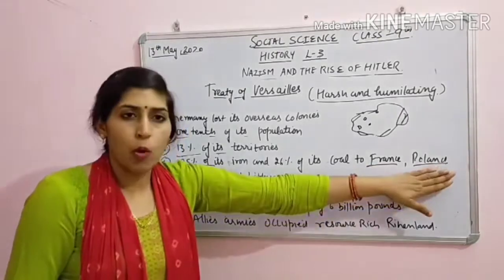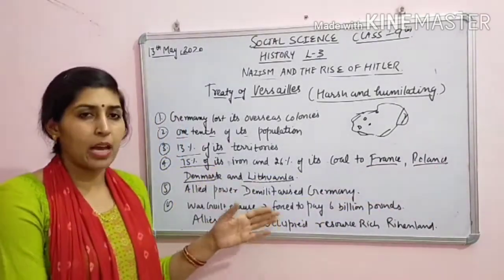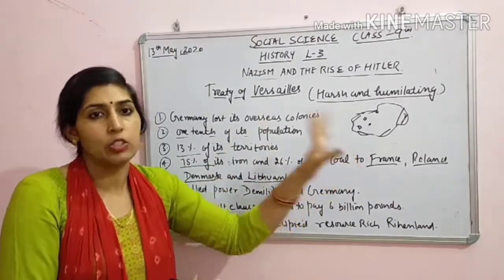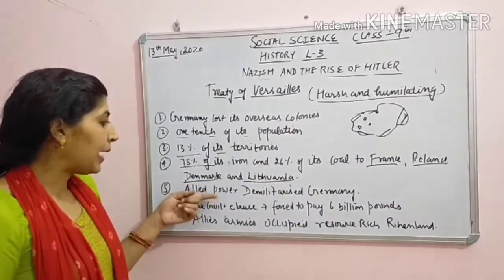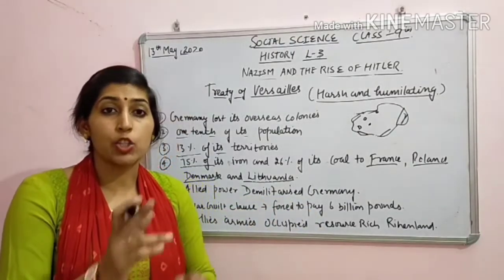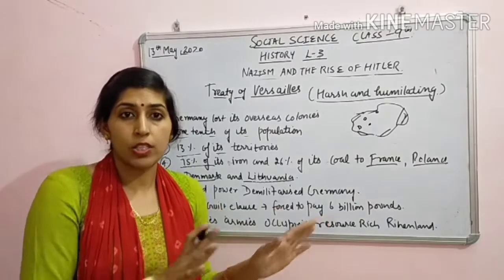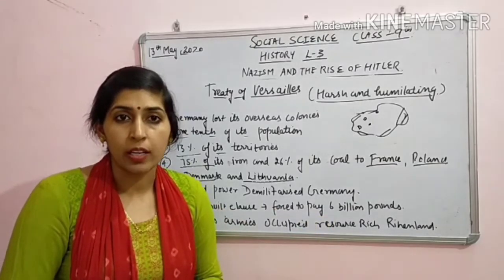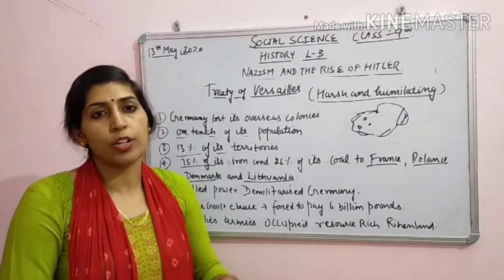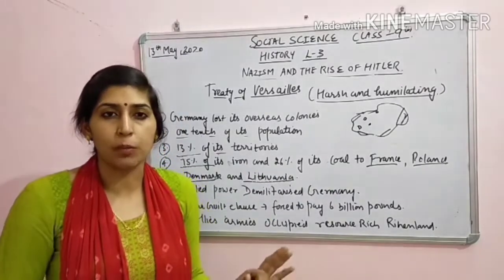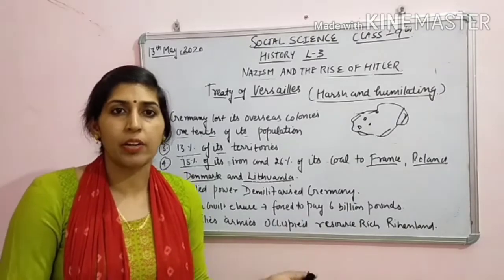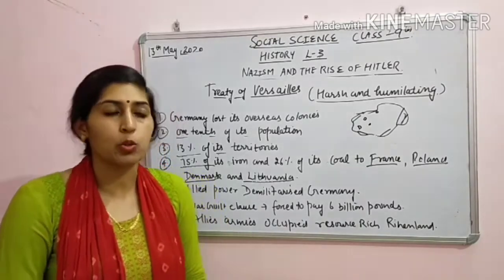Allied power ne Germany ko demilitarize kar diya - allied power ne kaha ki Germany aage phirse kisi war ki preparation kar le, koi dubara se war start kar dhe chalaki se, isle nere - demilitarize hi kar diya ki military uski khatam karo. Tum logon ki Germany mein military nahi rahegi. Agar military nahi hai toh matlab country ki power waise hi khatam ho jaayegi.